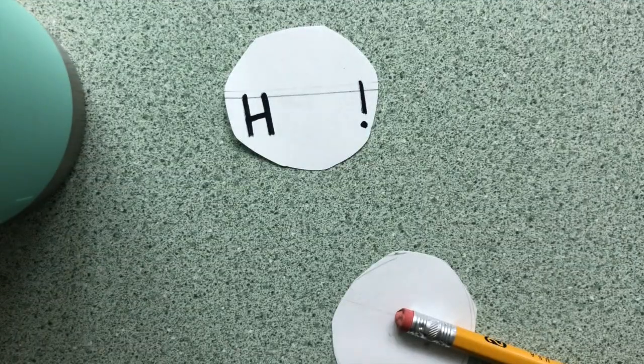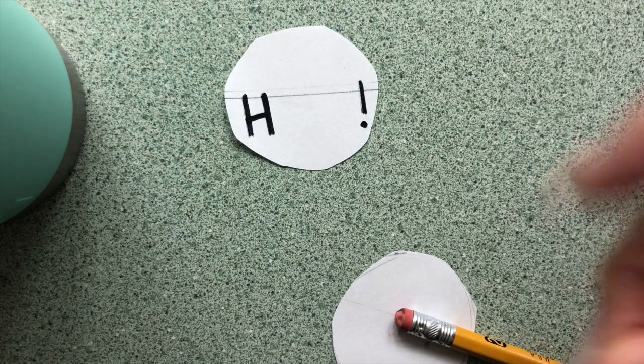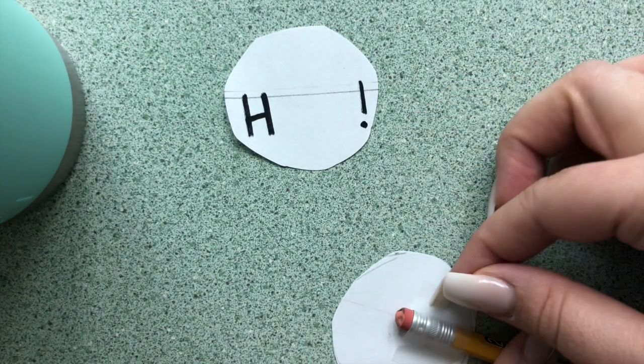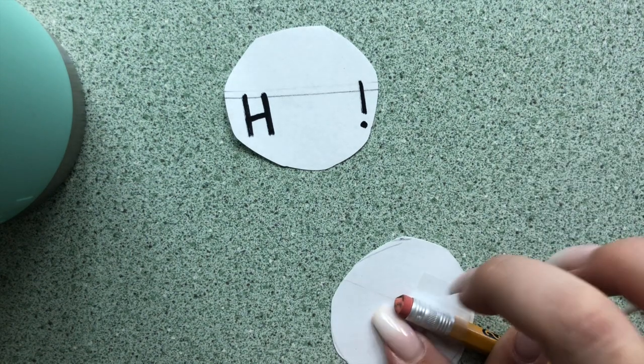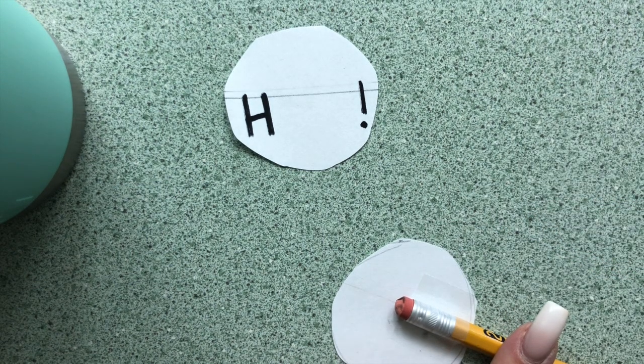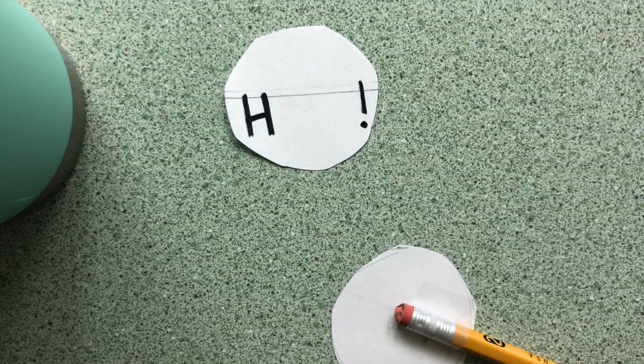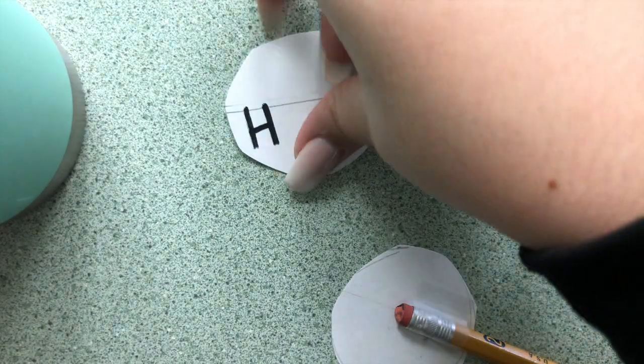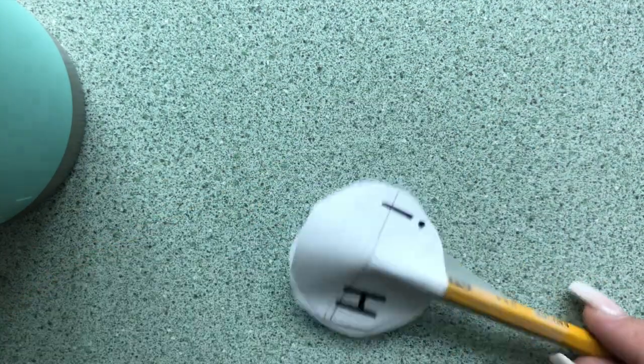Now place your pencil on the back of one of the circles, so the end is in the center of the circle. Tape it in place. Then line up the second circle with the first, and tape it to the other side of the pencil.